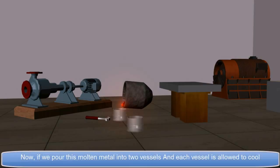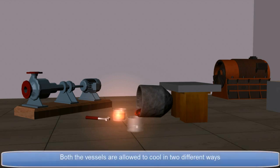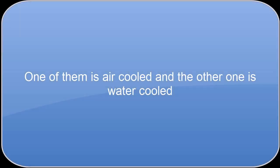Now, if we pour this molten metal into two vessels, and each vessel is allowed to cool, both the vessels are allowed to cool in two different ways. One of them is air-cooled, and the other one is water-cooled.